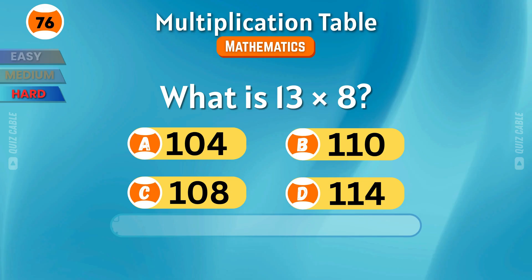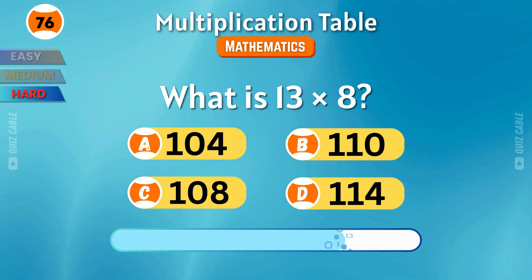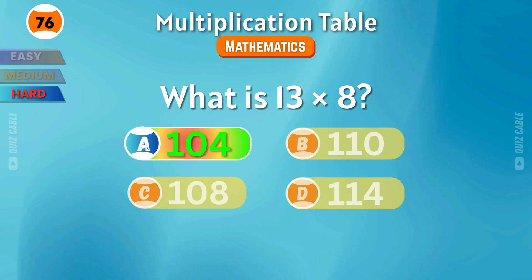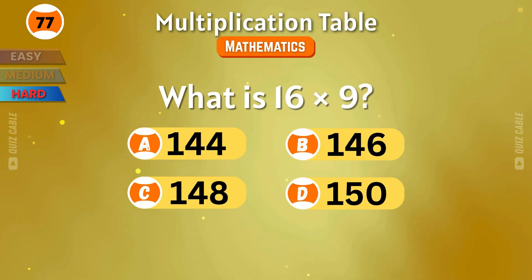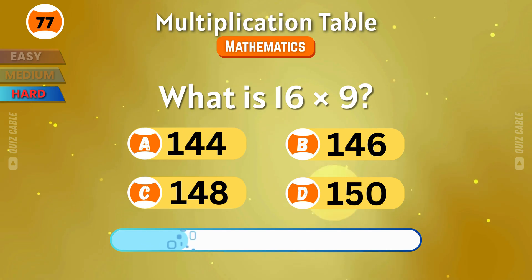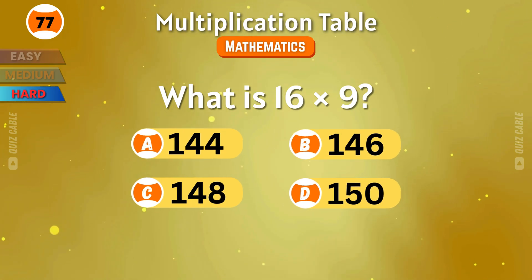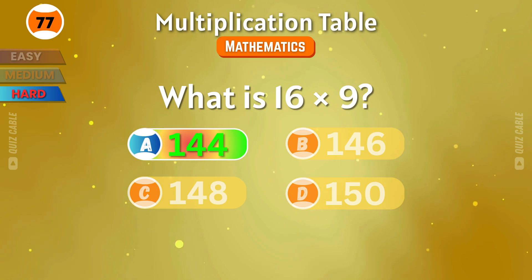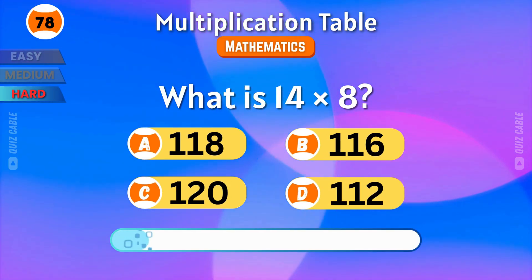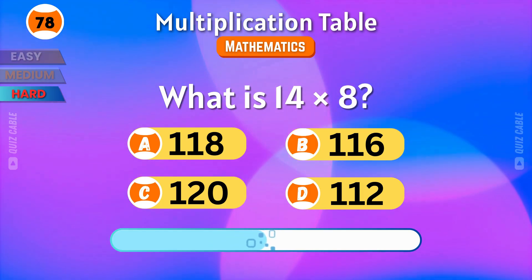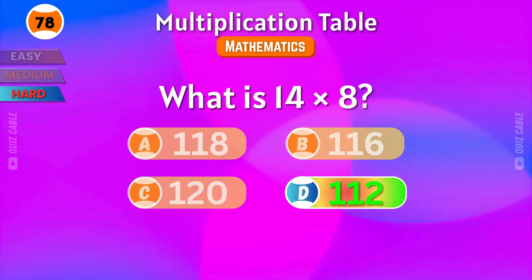What is 13 times 8? That's 104. What is 16 times 9? That's 144. What is 14 times 8? The result is 112.